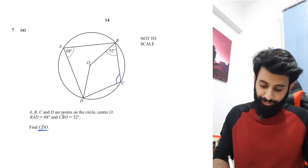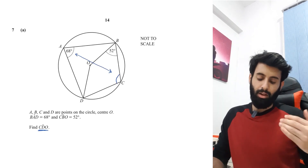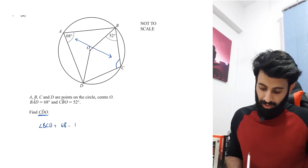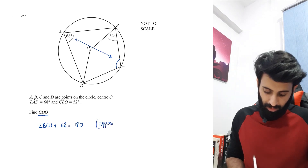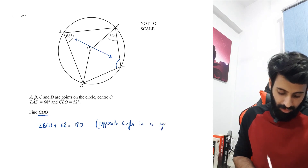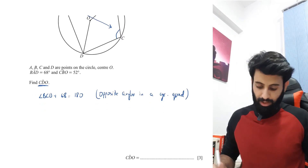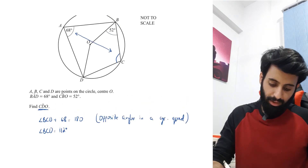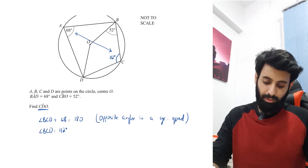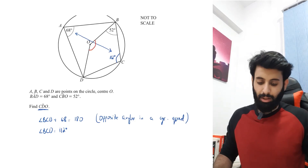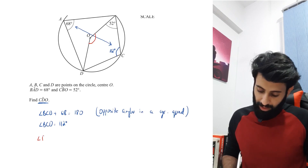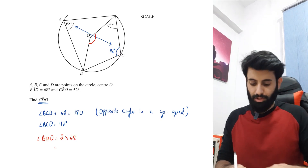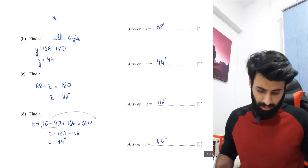Since it's a three-mark question, show good working. First, ABCD is a cyclic quadrilateral so opposite angles are supplementary: angle BCD plus 68 equals 180, giving angle BCD equals 112 degrees. Next, angle BOD equals 2 times 68 equals 136 degrees, because the angle at the center is twice the angle at the circumference.